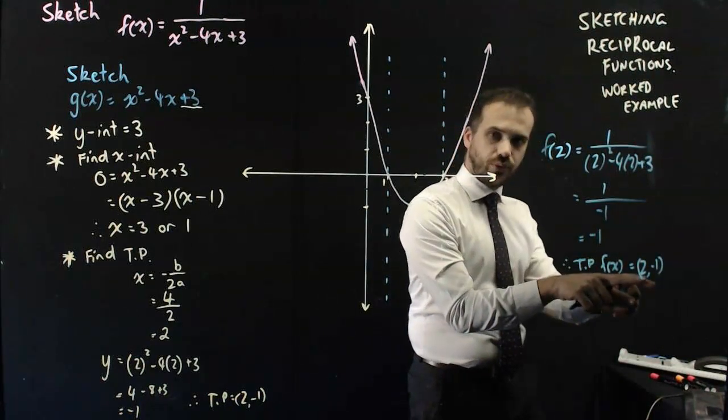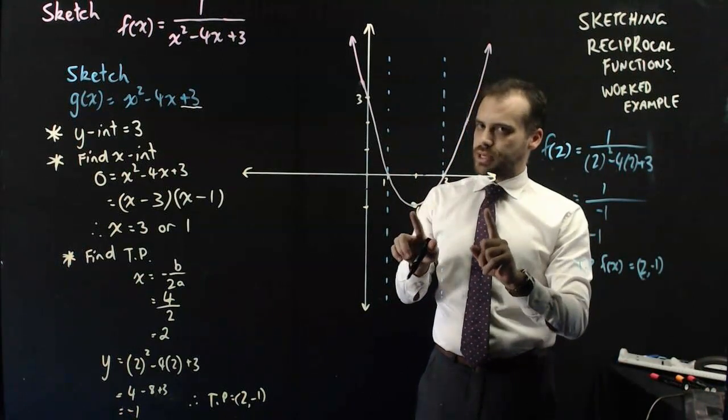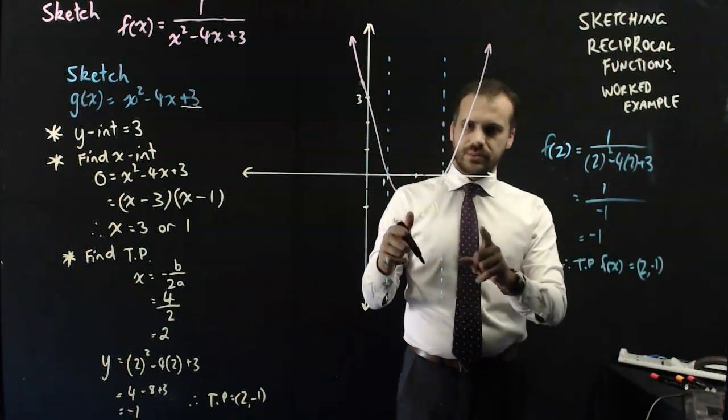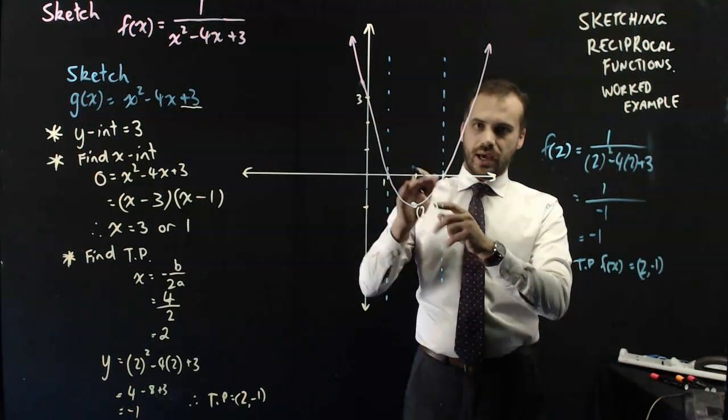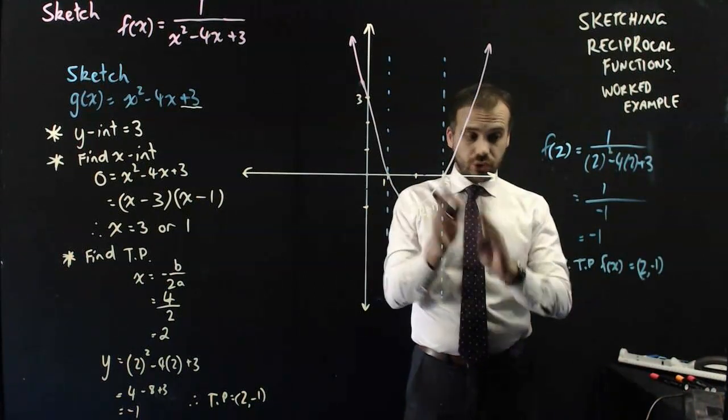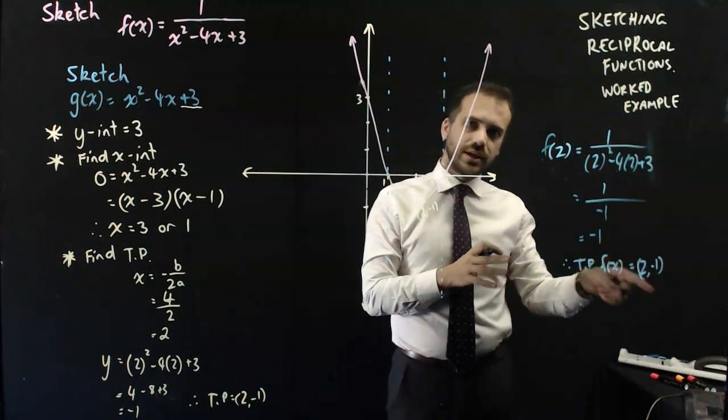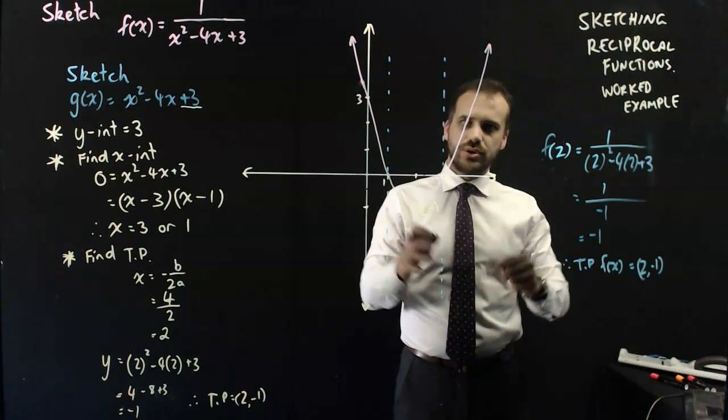Now, that 2, negative 1, that's the same as that. But it's not going to be a maximum. It's going to be a... Sorry, it's not going to be a minimum. It's going to be a maximum. Now, it's not always like this. This is very unusual that 2, negative 1 would match up with 2, negative 1.